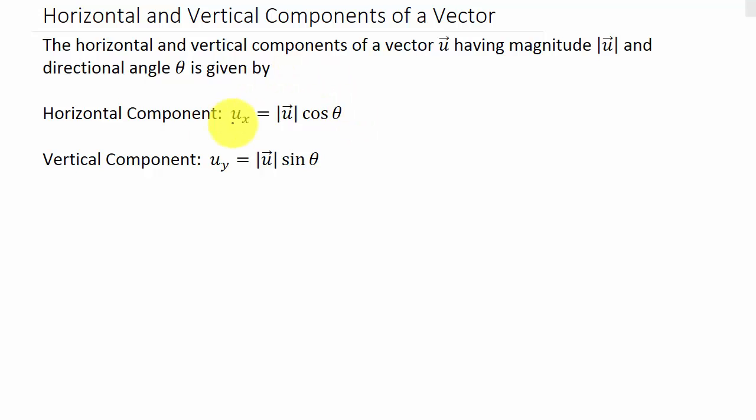So those are your formulas, but if you forget them, let's just draw this out and look at it. Let's suppose we have some vector here, u. Okay, well here is the horizontal component and here is the vertical component. So this would be u_x and this would be u_y.